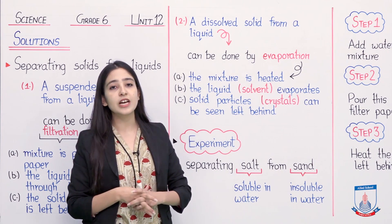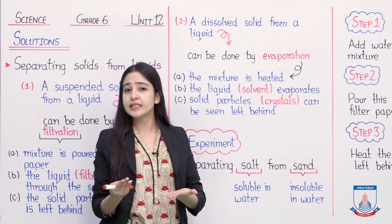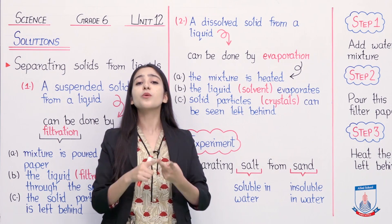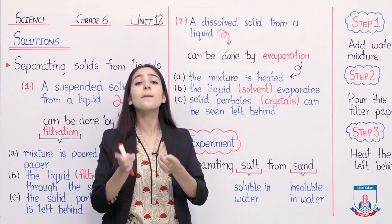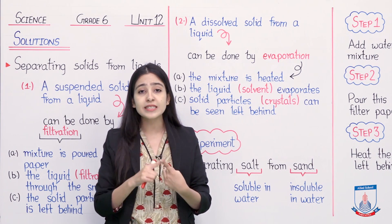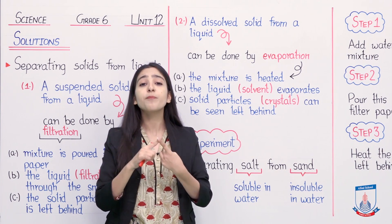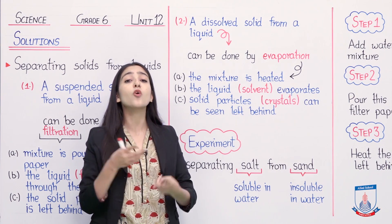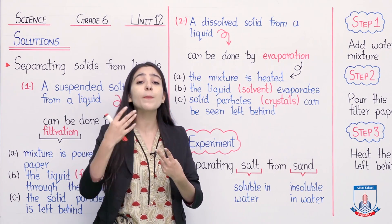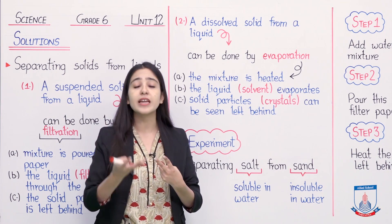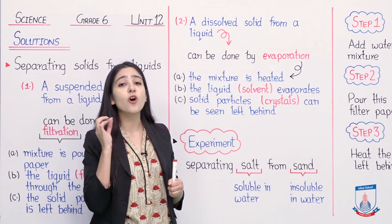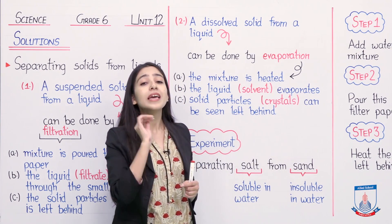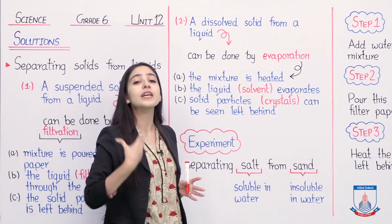When liquid is heated, it changes its state. There are three states of matter: solid state, liquid state, and gaseous state. If we take ice, this is a solid state of matter. If the ice melts, we say it is the liquid state of matter. If we heat this liquid state, it converts into vapors or steam — we call it the gaseous state of matter. So in the evaporation process, the liquid state is heated and it converts itself into the gaseous state.